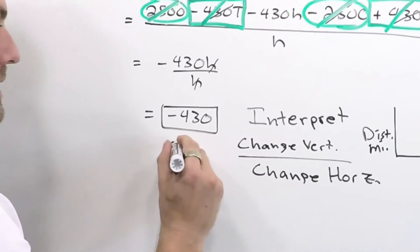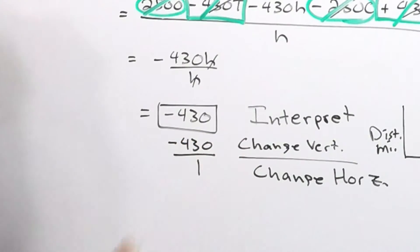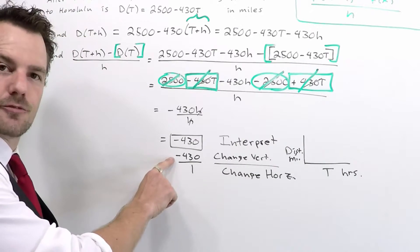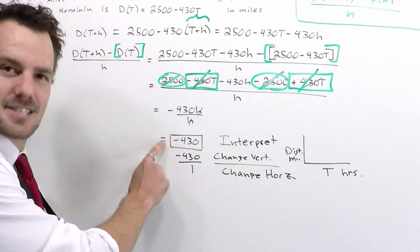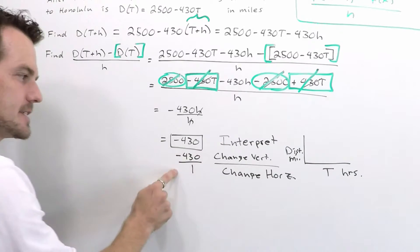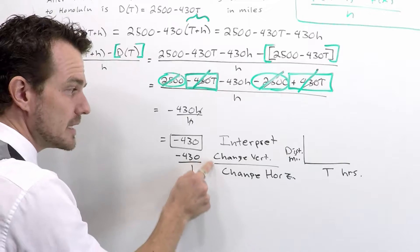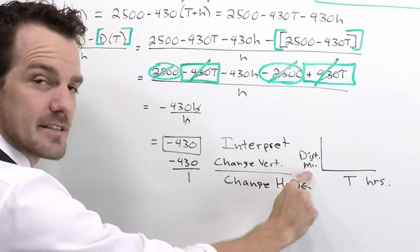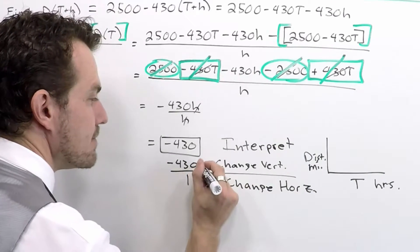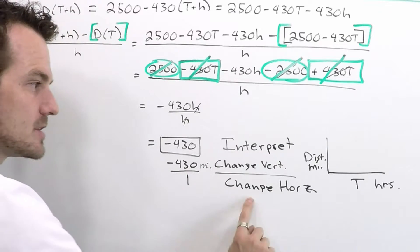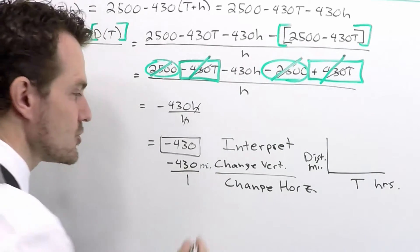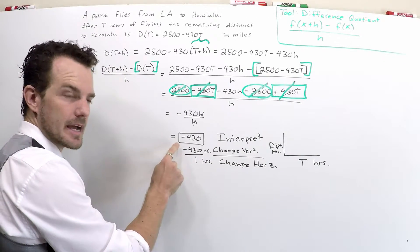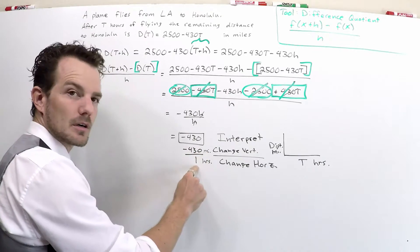The interpretation is the change in the vertical divided by the change in the horizontal. We rewrite negative 430 as a fraction: negative 430 over 1. You're always allowed to do that — negative 430 divided by one is still negative 430. Now that it's a fraction, we can interpret each piece. The negative 430 is the change vertically, meaning the distance in miles. The bottom is the change in the horizontal axis, which is in hours. So the result is negative 430 miles per hour.